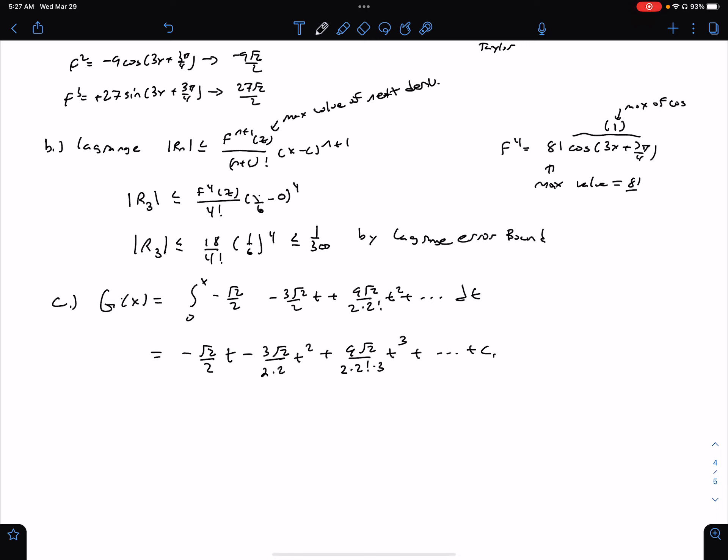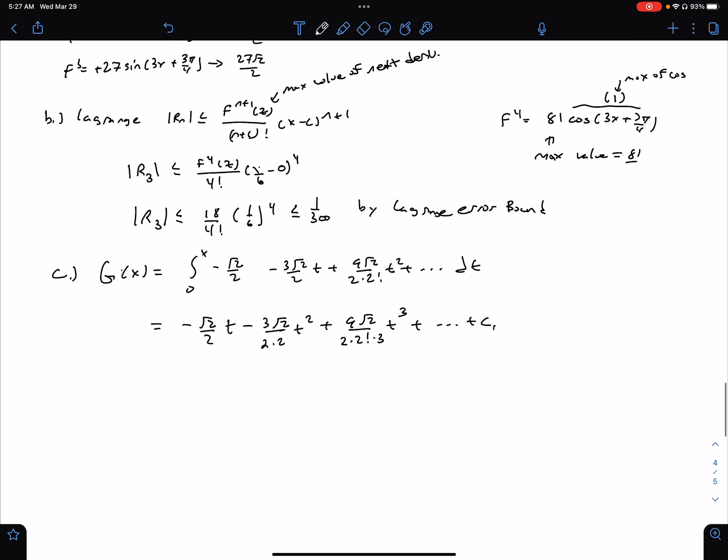plus some c right there, some arbitrary c value. Although I don't need a c value here because we are doing a definite integral. So we're going to evaluate this from 0 to x. I don't have to worry about the 0 because if I plug in 0, these all just become 0. So just worry about the x. So using the FTC,